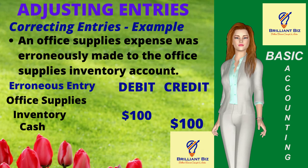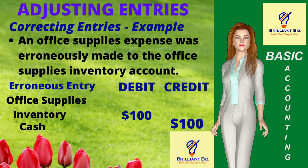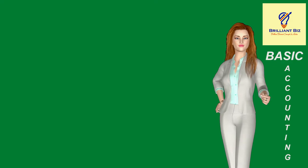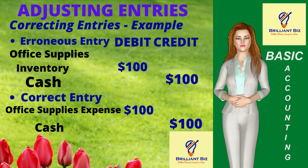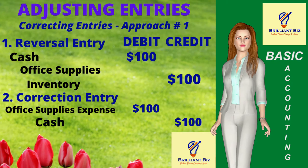For example, an office supplies expense was erroneously made to the office supplies inventory account. The original and erroneous entry is debit office supplies inventory $100 and credit cash $100. The correct entry is debit office supplies expense $100 and credit cash. Take note that only the account title that was debited was erroneous, hence any of the following approaches is applicable.